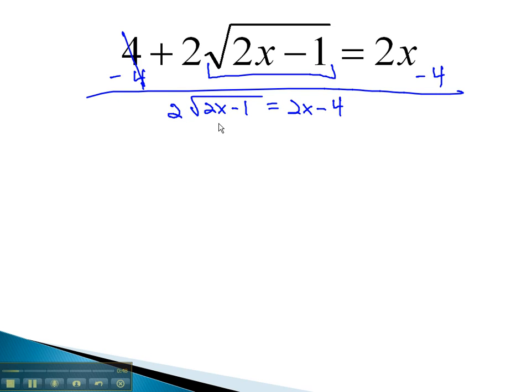Now, we can get rid of the 2 by dividing both sides by 2. Remember, with division, we must divide every term by 2, giving us the square root of 2x minus 1 equals x minus 2.